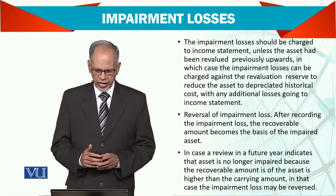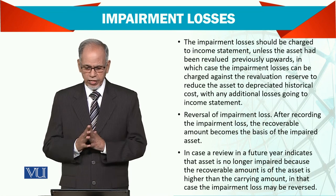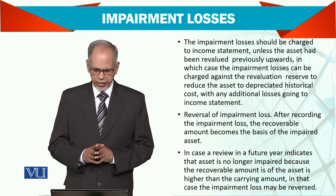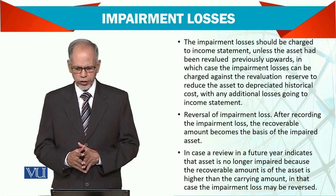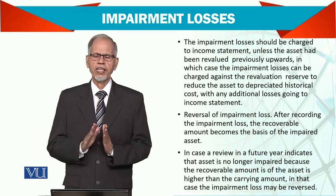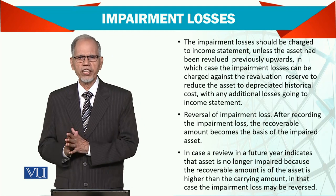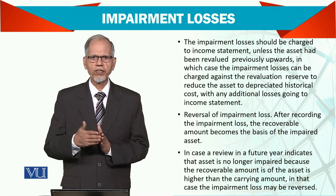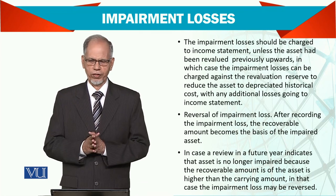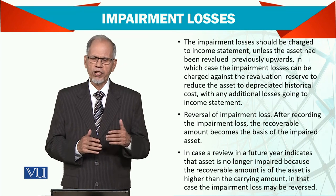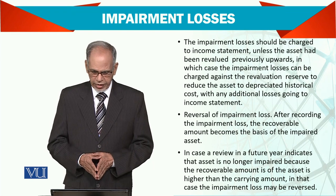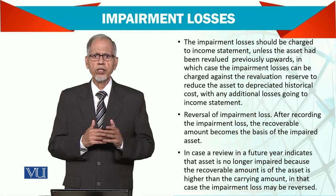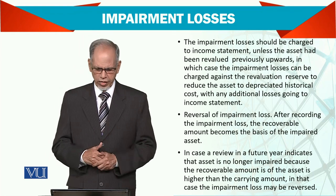In the case of revaluation, impairment loss will be charged to the revaluation reserve to reduce the asset to depreciated historical cost, and any additional loss will go to the income statement. Simply put, if there is a revaluation reserve already against that asset and there is an impairment loss, we should first write off this loss against that reserve. If there is a greater impairment loss, then it will be charged to the income statement. If there is no revaluation, the total impairment loss will be charged to the profit and loss account.